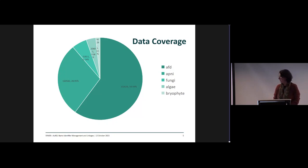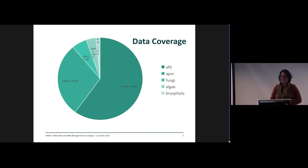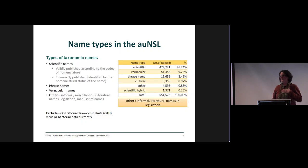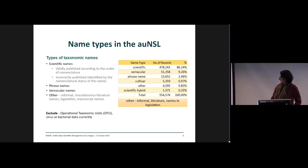A small snapshot of the coverage of data that we have: AFD is the Australian Faunal Directory, which is the zoological data, and the others are APNI, fungi, algae, and bryophyte — and we're merging lichens into fungi at the moment. We have a fair range of coverage of data, but as with all data sets, it's not 100% complete. One of the main things to take into account is that not all names are scientific names. We also capture phrase names, vernacular names, cultivars as part of the Australian Cultivar Register, hybrids, et cetera. So there isn't one name source that we can go to and get a name identifier for everything. We do not at the moment include viruses and bacteria in our data sets or other operational taxonomic units.